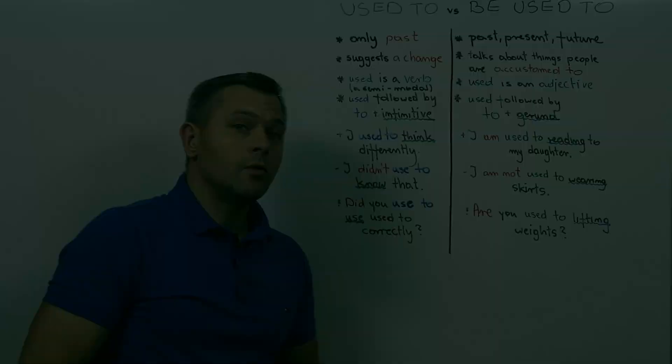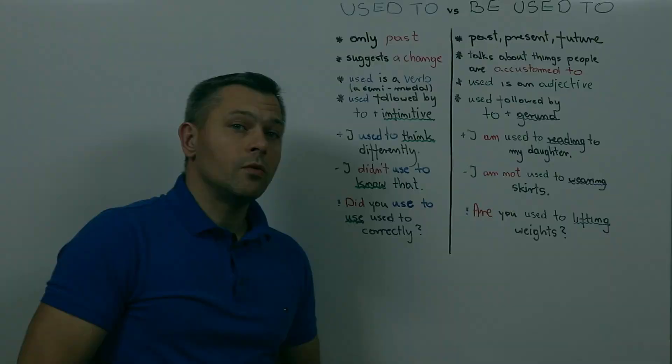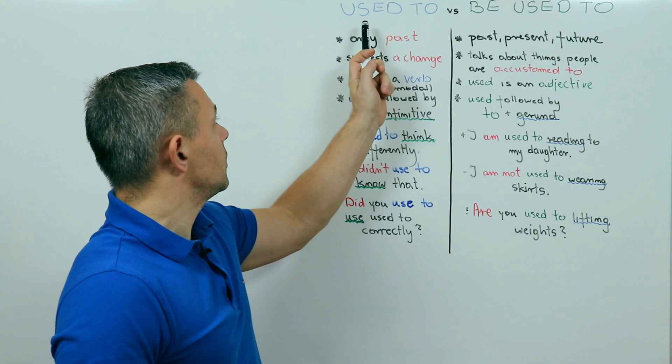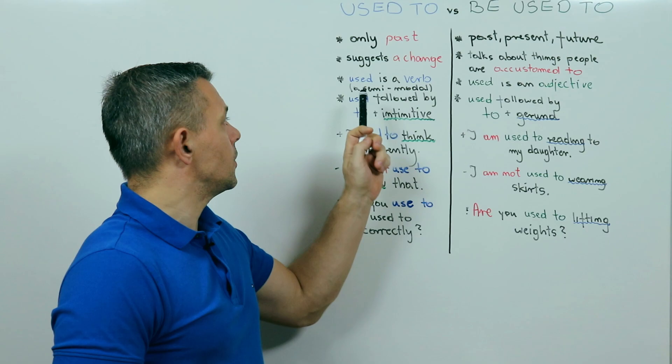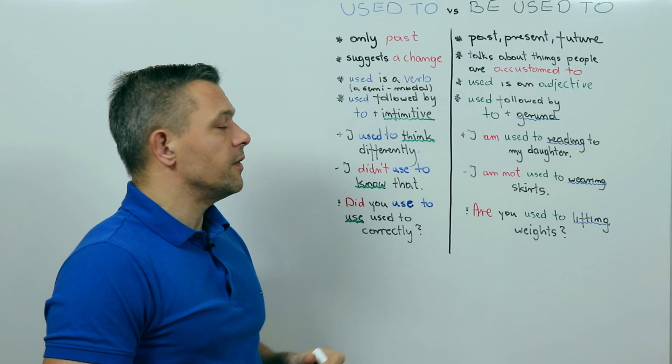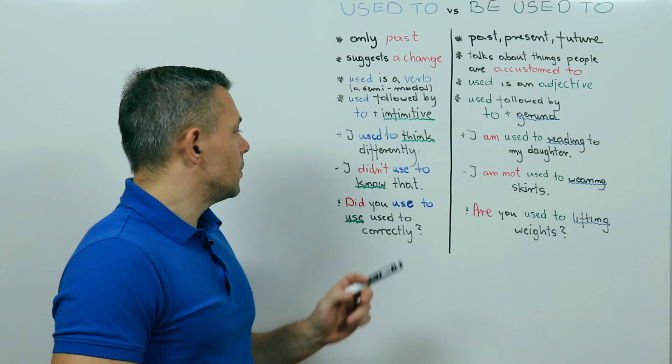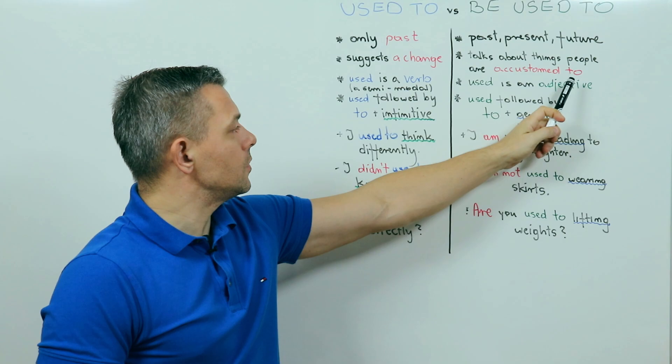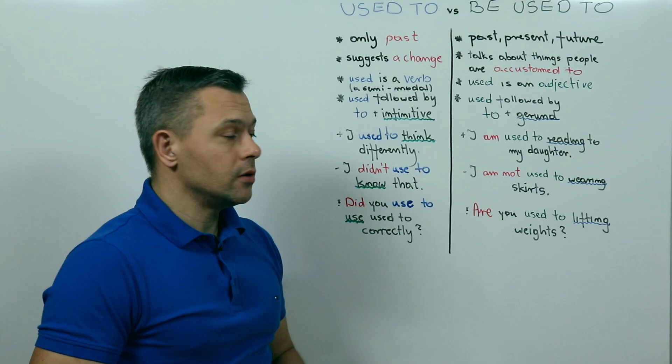Right, so we have now covered both structures with used to. Let's briefly go over them once again and have a look at the key points. First, used to. Only past, suggests a change, used is a verb, a semi-modal, and is followed by to plus infinitive. Like in I used to think differently. I didn't use to know that. Did you use to use used to correctly? And be used to. Past, present, and future. Talks about things people are accustomed to. Used is an adjective. Used is followed by to plus gerund. Like in I am used to reading to my daughter. I am not used to wearing skirts. Or, are you used to lifting weights?